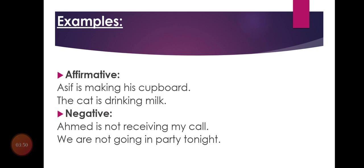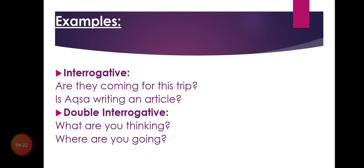Affirmative examples: 'Asif is making his cupboard.' 'The cat is drinking milk' — here 'the cat' is the subject, 'is' is the auxiliary, and 'drinking' is the verb ING form, and 'milk' is the object. Negative examples: 'Amet is not receiving my call.' 'We are not going to the party tonight.' Interrogative examples: 'Are they coming for this trip?' 'Is Xar writing an article?' Double interrogative: 'What are you thinking?' 'Where are you going?'